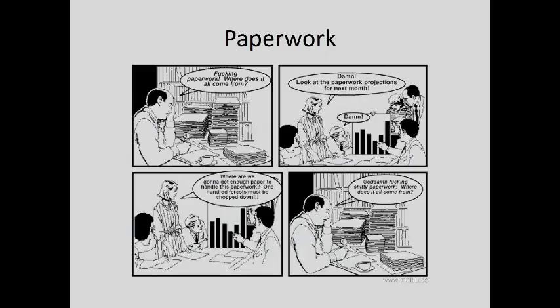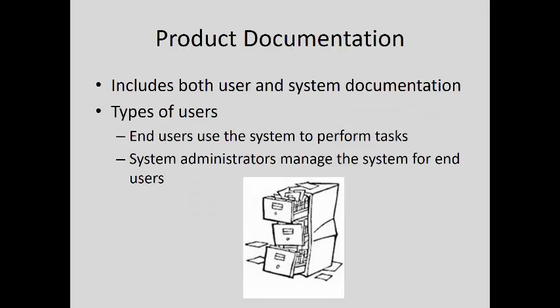Product documentation includes both user and system documentation. There are different types of users: end users who use the system to perform tasks, and system administrators who manage the system for end users. You often need to produce documentation for both. The functional specification — which we probably won't be doing in this implementation of CS-461 — is used by managers and system evaluators. Installation documentation is used by system administrators: where files go, what the executables are, external dependencies, and any special OS requirements. The introductory manual is used by end users, while a more detailed reference manual is used by experienced users.